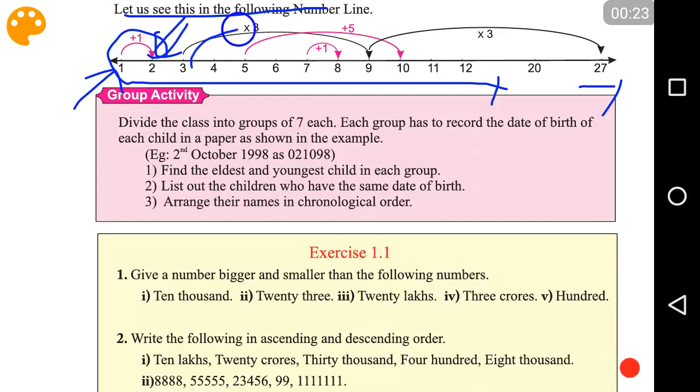If we multiply 3 by 3, then we will get 9. We will reach this point if we multiply this by 3.